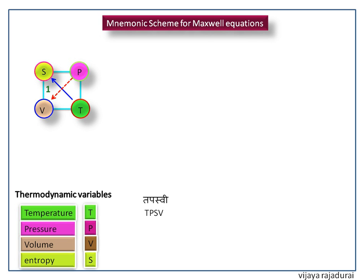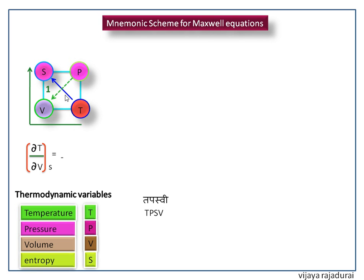Then draw diagonals towards 1. To get the first equation, we start from T to S via V. Here the diagonal is in the upward direction so we get a positive sign on the left side. The diagonal on the right side is in the downward direction so we put a negative sign — partial derivative of P with respect to S at constant V. This is one of the Maxwell equations.